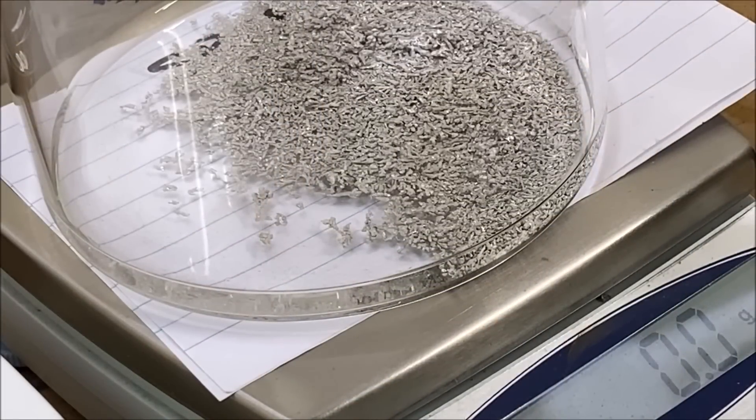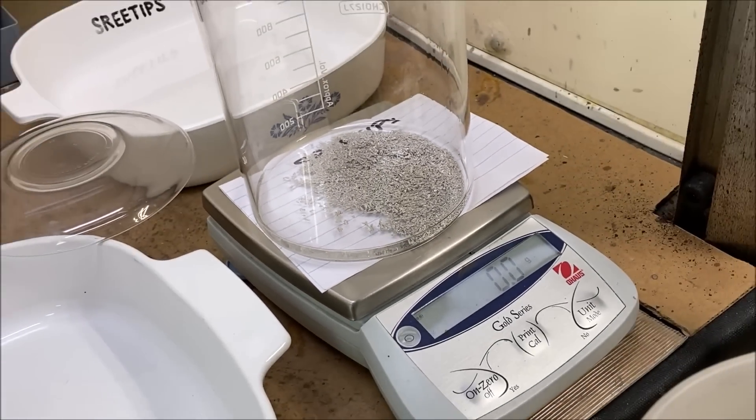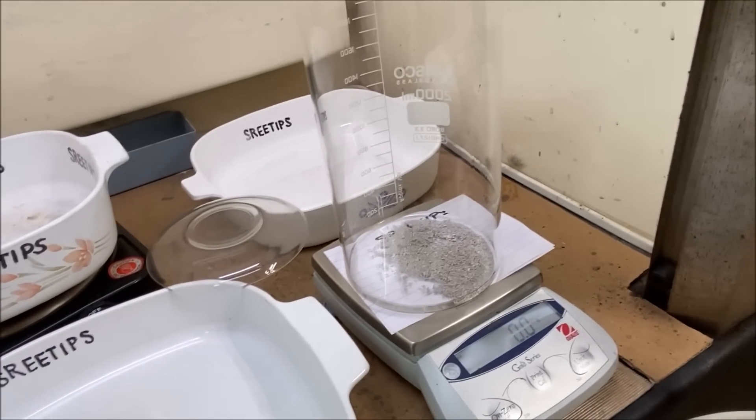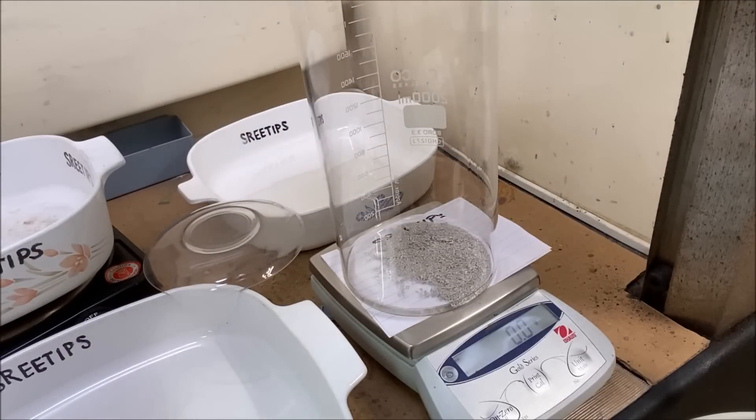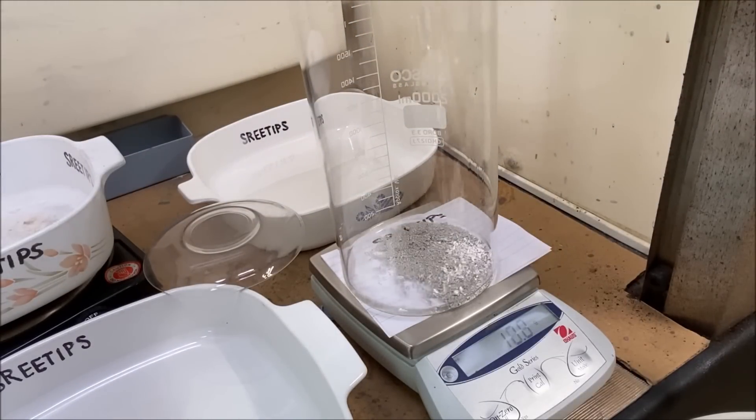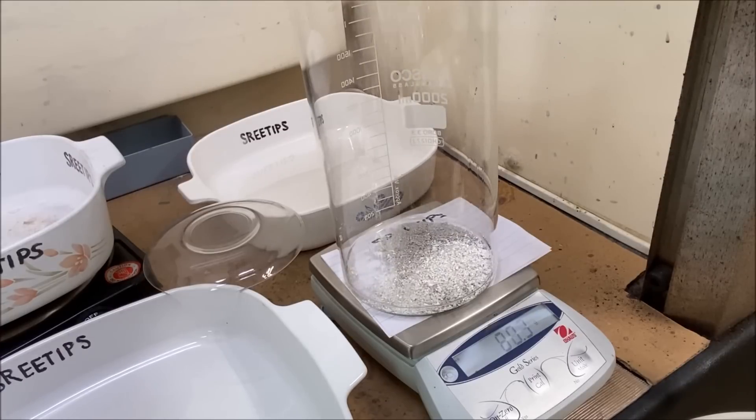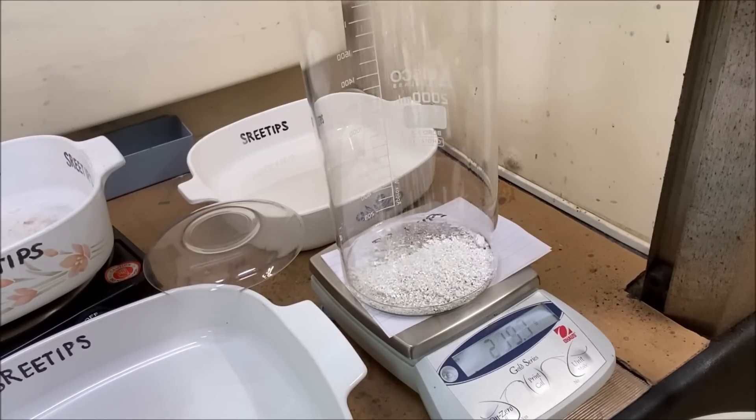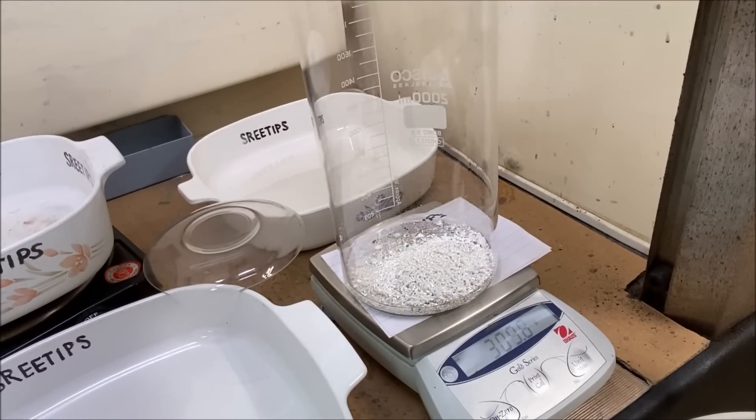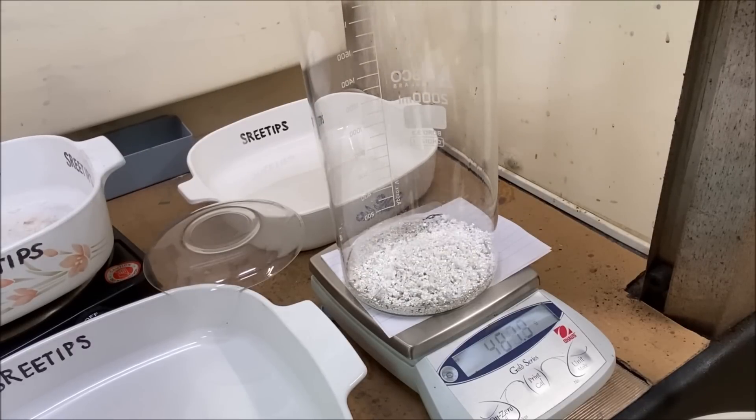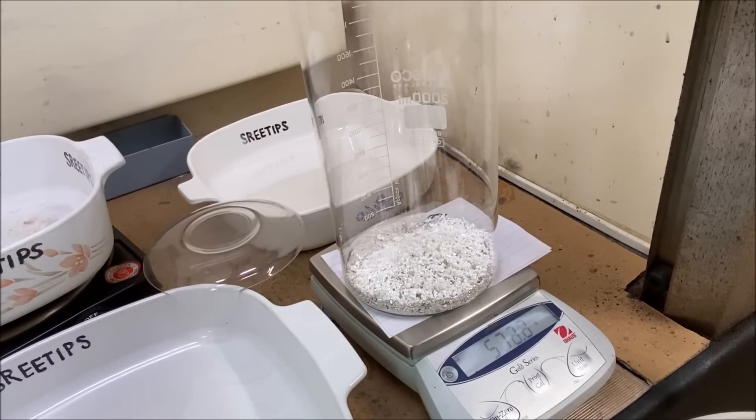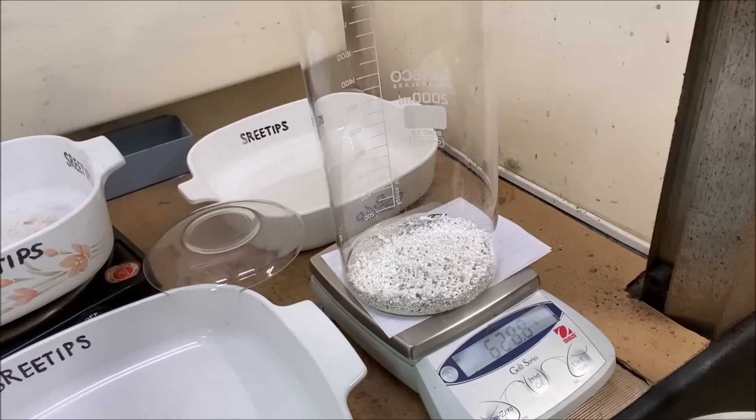We've got the beaker tared to zero on the scale, so now what we'll do is I've got some silver crystal here and I'll measure out about 600 grams of this into our beaker. That's enough, that's about 627 grams of pure silver added to the beaker.